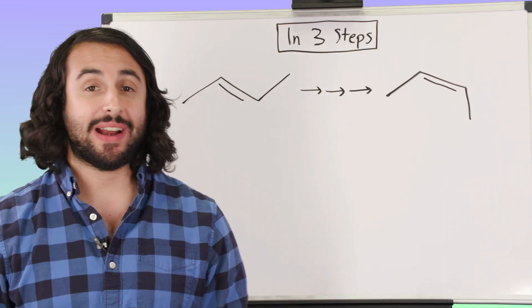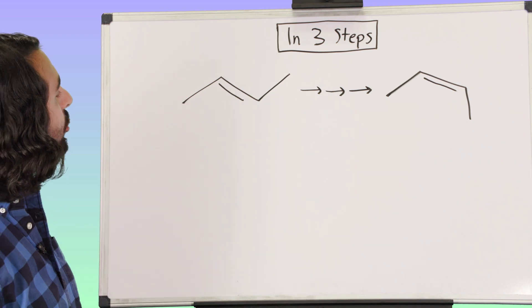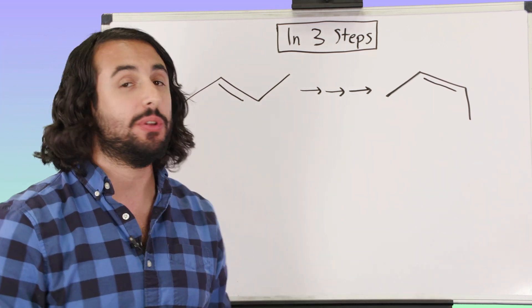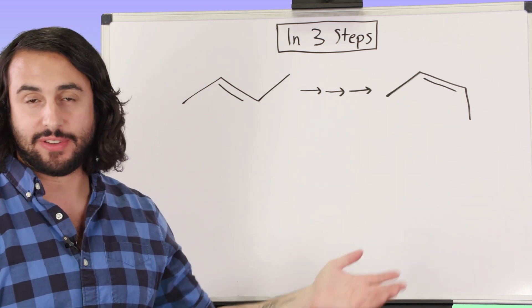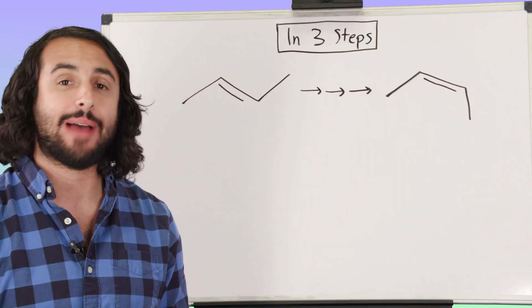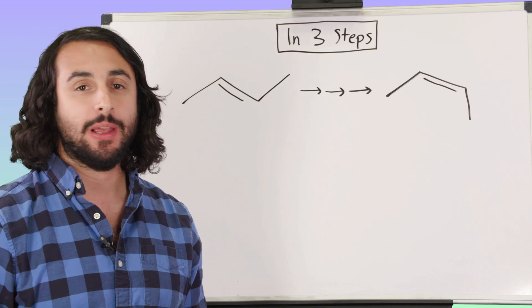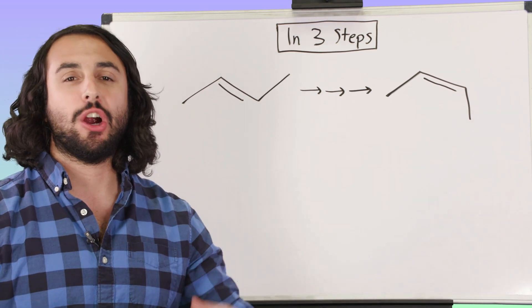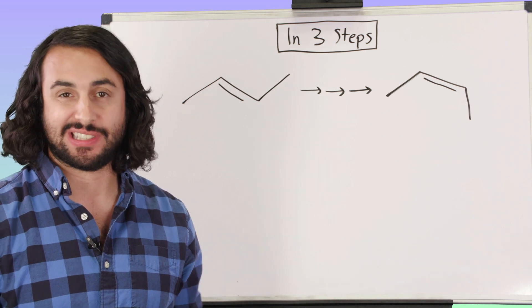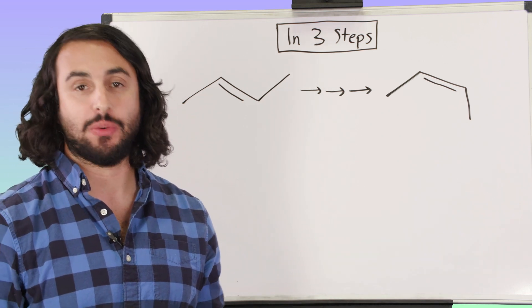Okay, so let's talk about how we're going to do this. We've got trans-2-butene and we want to get to cis-2-butene. Obviously, this is not very practical - these are both readily available, so no one would actually do this in the lab. But it's a nice thought experiment to test if we can comb through our toolkit of reactions and figure out a strategy.